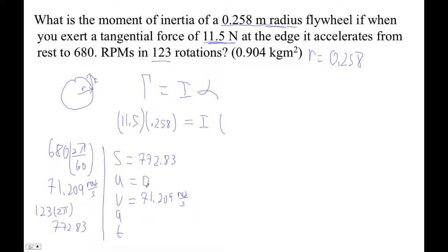Okay, initial velocity is 0. Okay, yeah, we're just trying to find alpha is what we're trying to do. Okay, so we want to use no T, right? So V squared is U squared plus 2AS. So A is V squared minus U squared over 2S. So it's 71.209 squared minus 0 squared over 2 times 772.83.